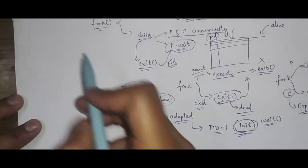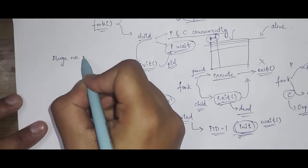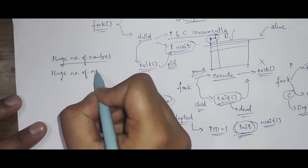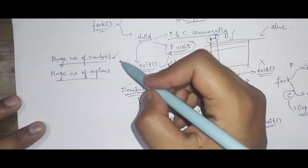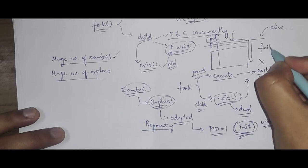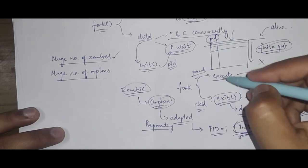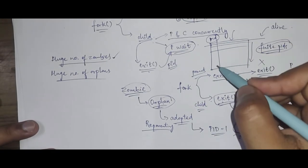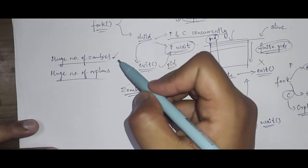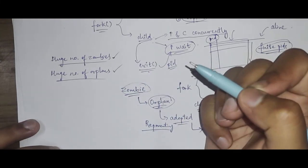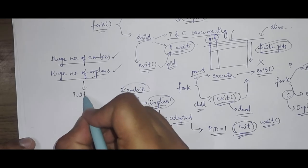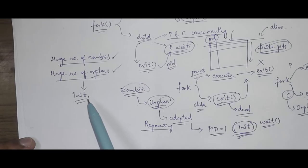Now let's see what happens when a large number of zombies or orphans are created. If there are a lot of zombies, the process table keeps getting filled up. Since we have a finite number of PIDs, once the process table is completely filled, no new entries can be added, which means no new processes can be created. If a lot of orphans are created, they all get adopted by the init process, which overloads it and slows down the system.